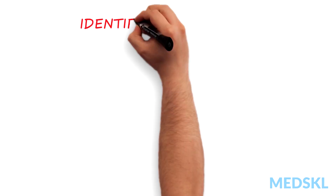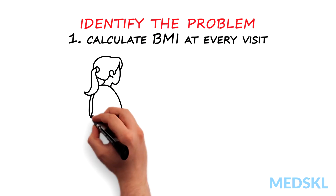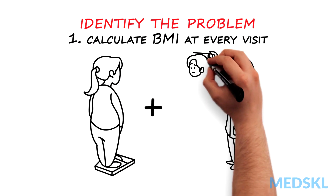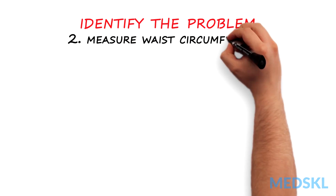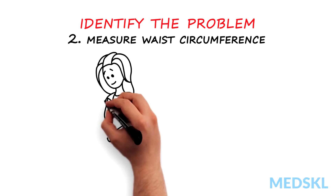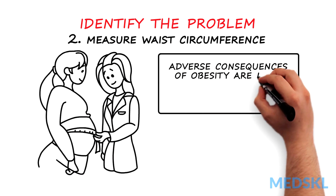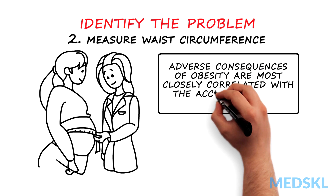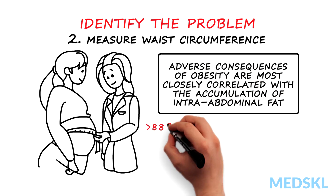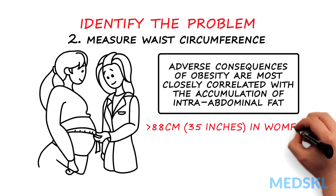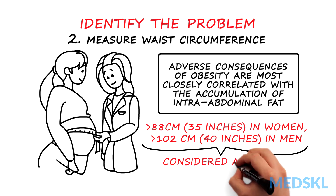The first step in obesity treatment is to identify the problem. It is important that a patient's BMI is calculated at every visit. Another important way to re-stratify patients is by measuring waist circumference, as the adverse consequences of obesity are most closely correlated with the accumulation of intra-abdominal fat. A waist circumference above 88 centimeters in women and above 102 centimeters in men is considered abnormal.